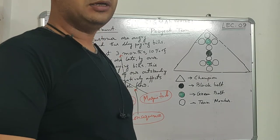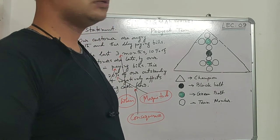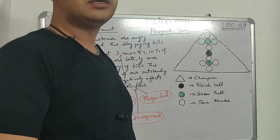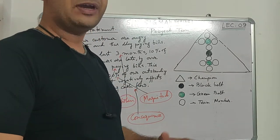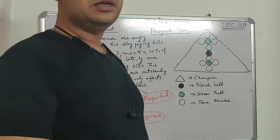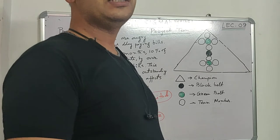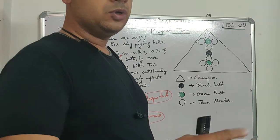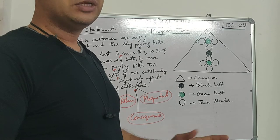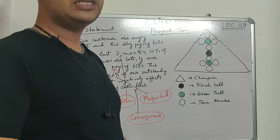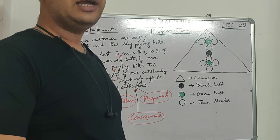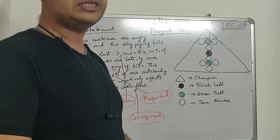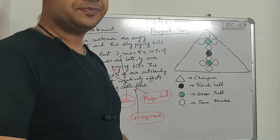In this lecture we will cover how to make a team for a project, how to finally define a project, and how to make a project charter. Before the measurement phase, we need to freeze our project title and team and we need to kick off our Six Sigma project.